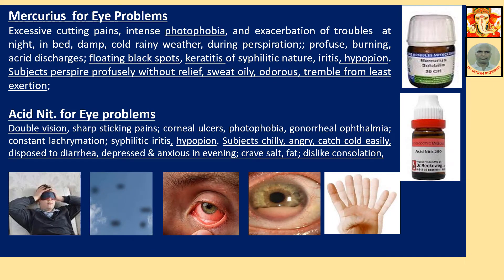Mercurius for eye troubles: excessive cutting pain, intense photophobia — cannot tolerate artificial light. Exacerbation of troubles at night, in bed, in damp cold rainy weather, during perspiration. Profuse burning acrid discharge. Floating black spots in the vision field. Keratitis of syphilitic nature. Hypopion — accumulation of pus or inflammatory fluid in the anterior chamber of the eye. Subject perspires profusely without relief; sweat is oily and odorous. Trembling from least exertion.